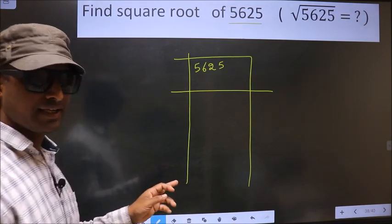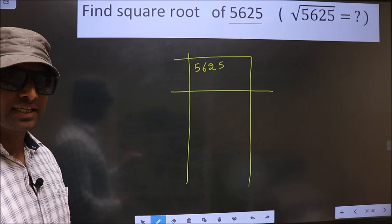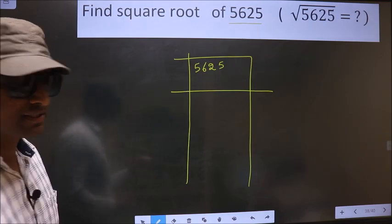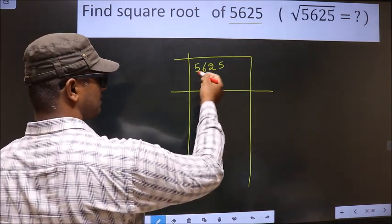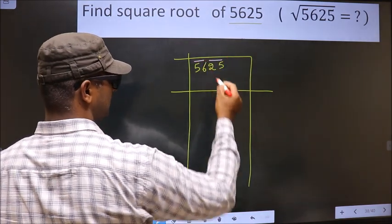Okay, next. Now, we should divide the given number into pairs, starting from this side. These two numbers one pair and these two numbers another pair.